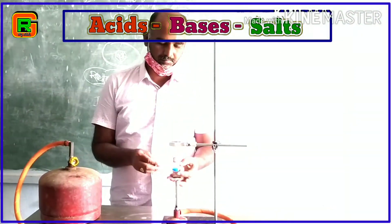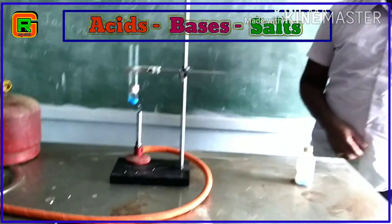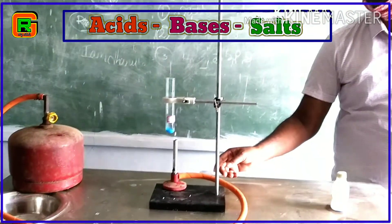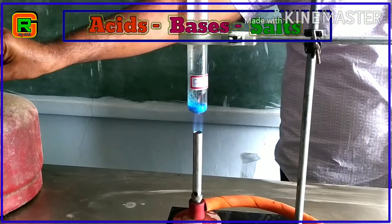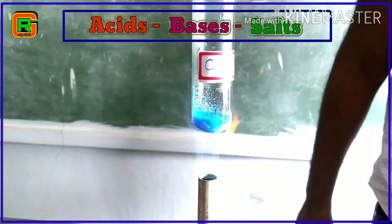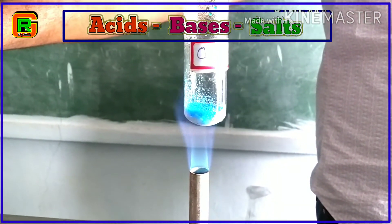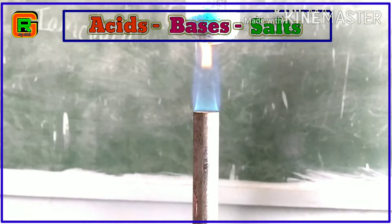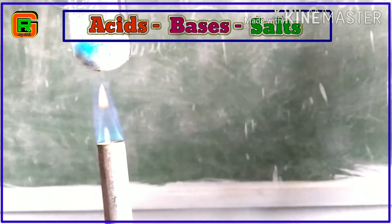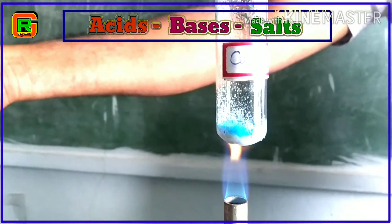Now let us heat these crystals with the help of a Bunsen burner. We should observe whether any changes are being made. We took copper sulphate crystals which are blue in color. Now observe carefully — on heating, what change occurs in color? Yes, the blue colored crystals gradually turn white.